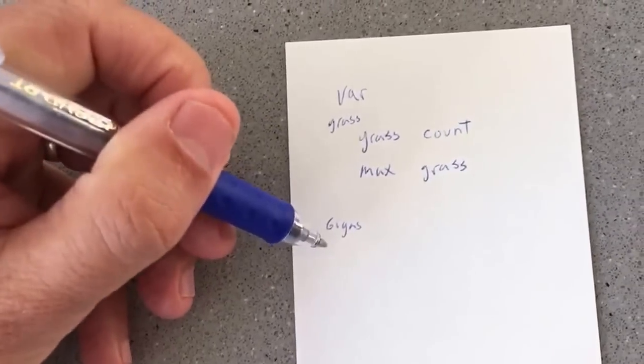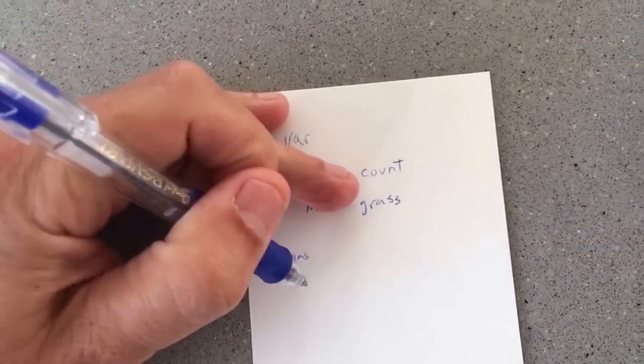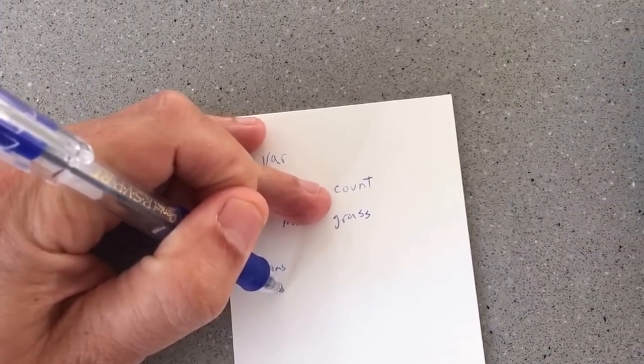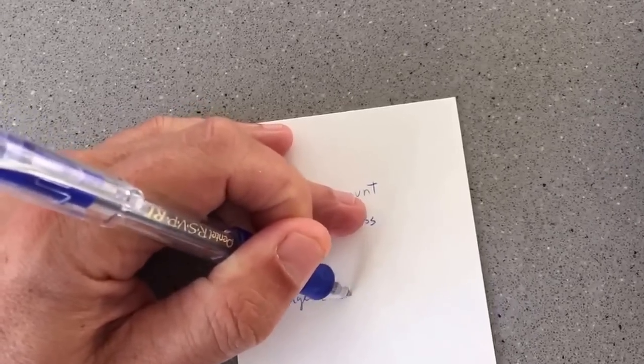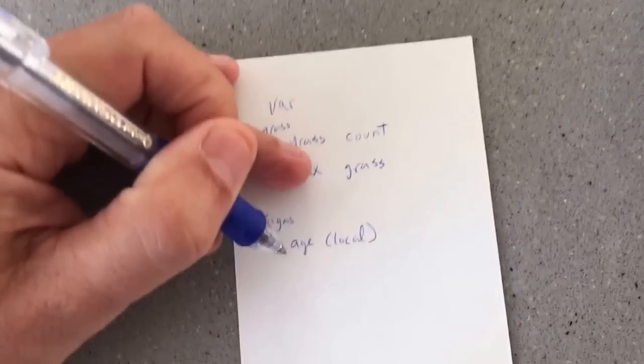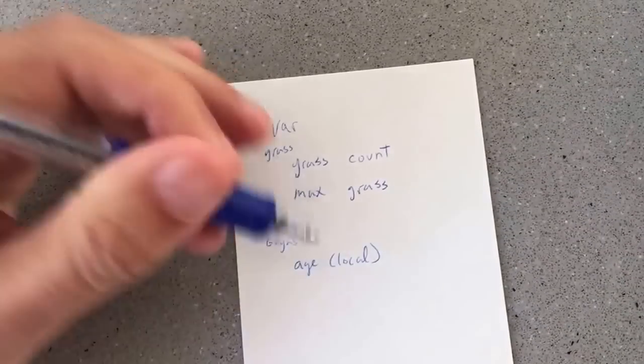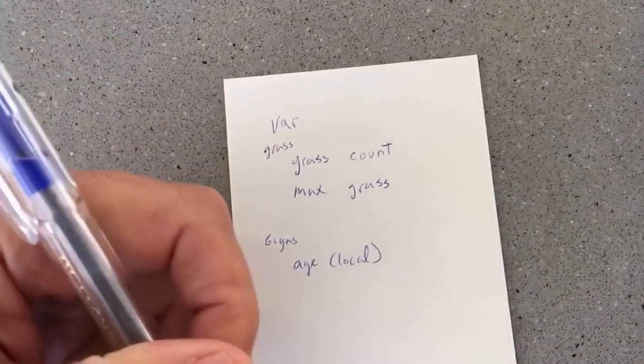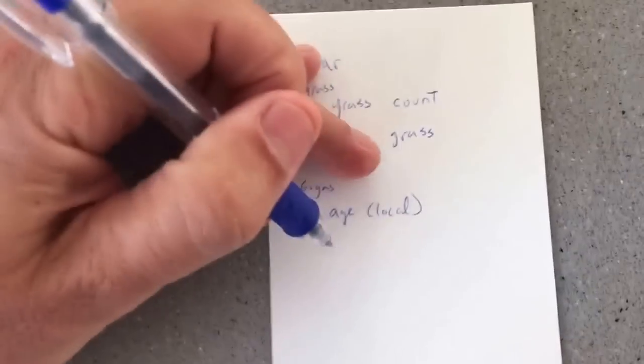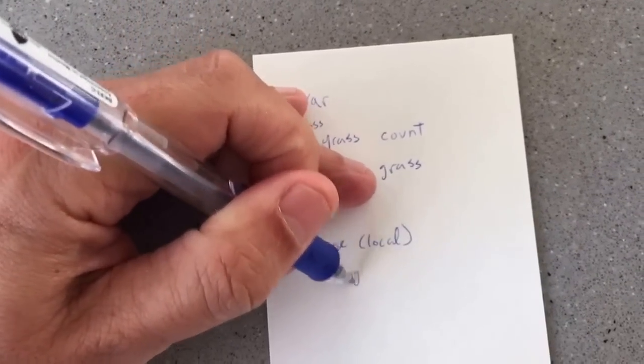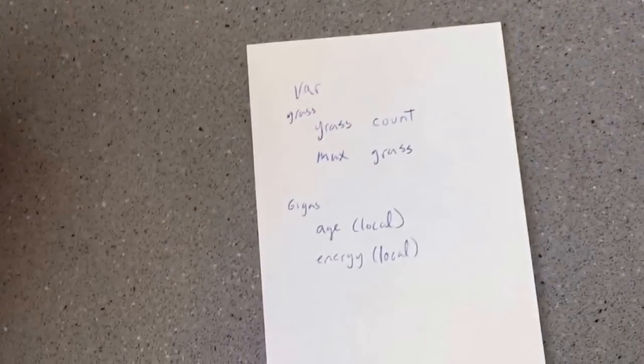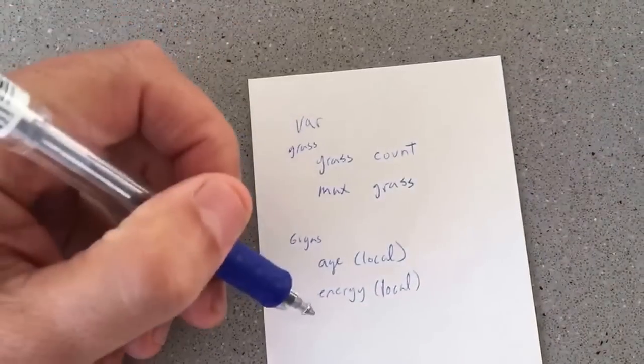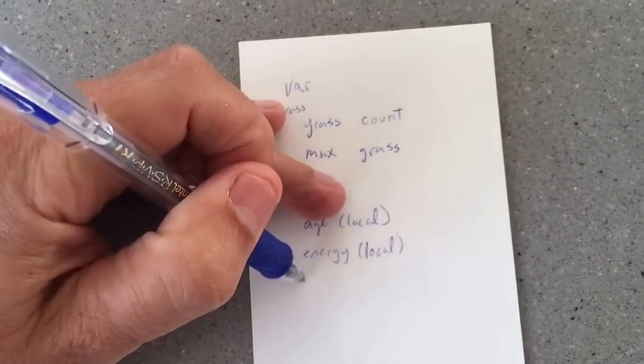So I'm going to have giga variables. And for each giga, I'm going to have age, local. I'm just reminding myself that that has to be a local variable because each giga has his own age. They're also going to eat the grass and gain energy. So I need to have energy, local, which is how much energy, how much power they have really. And they also need to live a certain amount of time. So there's longevity.